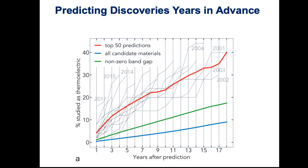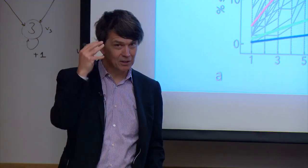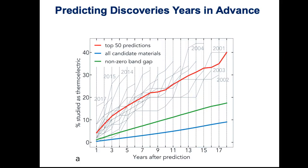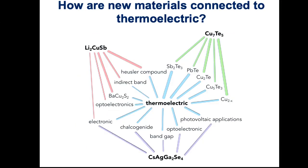The answer is actually yes. Taking the body of literature up to 2014 and looking one, three, five years later, within five years 30% of the materials I predicted have actually been studied as a thermoelectric. Unfortunately, as scientists, we seem to be predictable. And these materials were not known as thermoelectrics at the time.